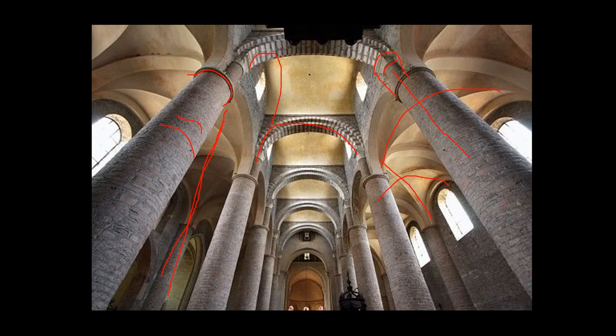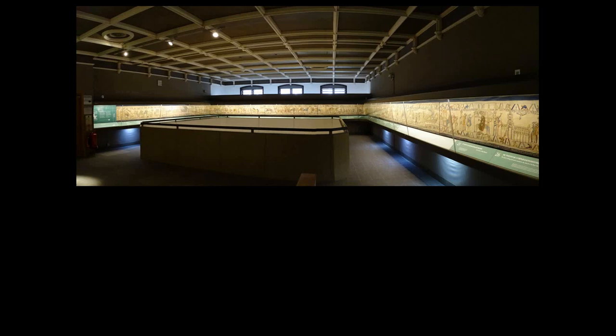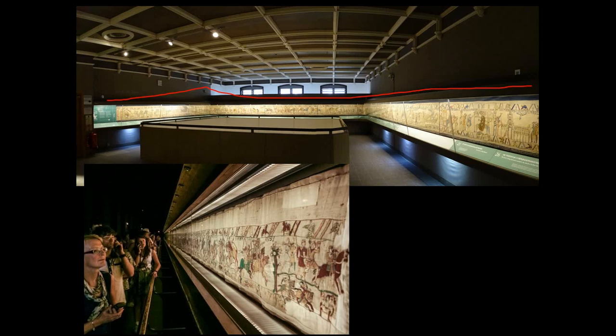Let's look at a remarkable work of art and historical document: the Bayeux Tapestry. We call it a tapestry, but it's technically not — a tapestry is woven, whereas this is wool and silk embroidery on linen, more like needlepoint. It's gigantic: more than 280 feet long, wrapping around three walls in the museum today, and about four feet high. It tells the story of the conquest of England by the Normans.